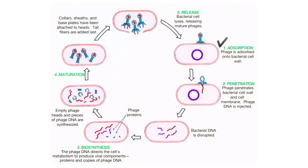The first step is adsorption. Adsorption is a chemical attraction that requires specific protein recognition factors. These recognition factors are found in phage tail fibers that bind to specific receptor sites on the host cell. These fibers bend and allow the pins to touch the cell surface. Many phages including T4 attach to the cell wall, while other phages can adsorb to the flagella or to the pili.